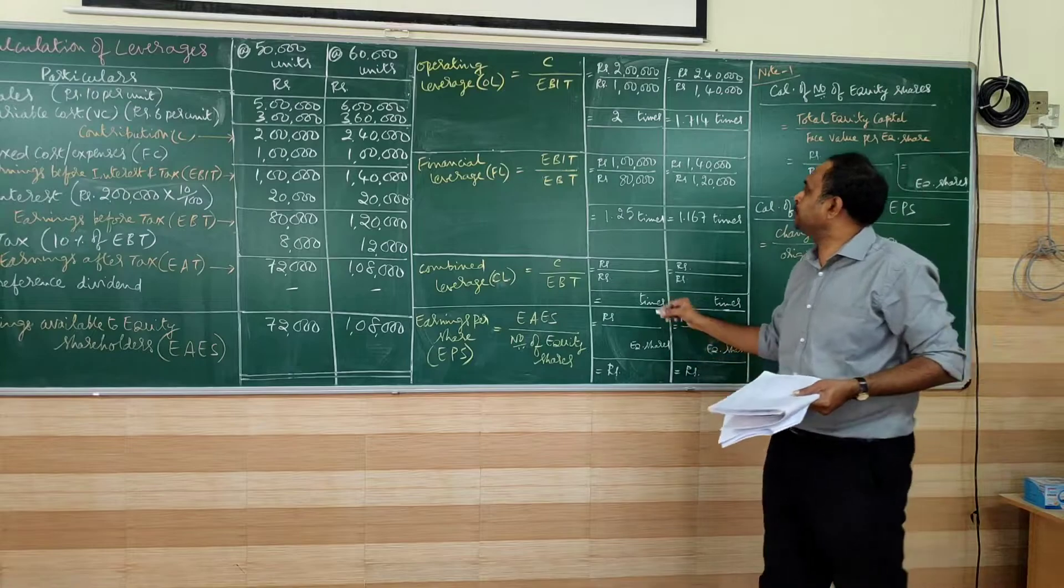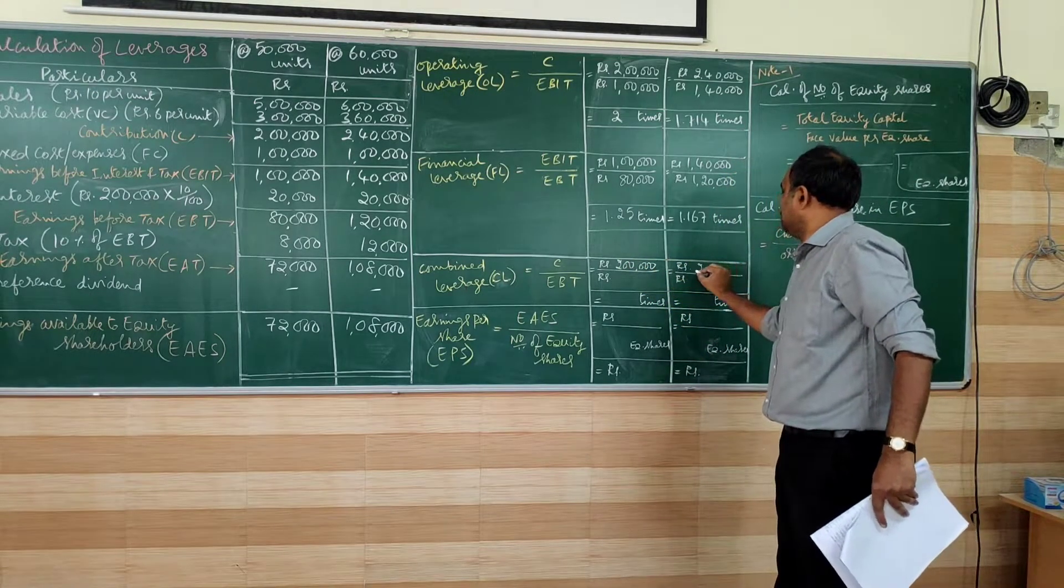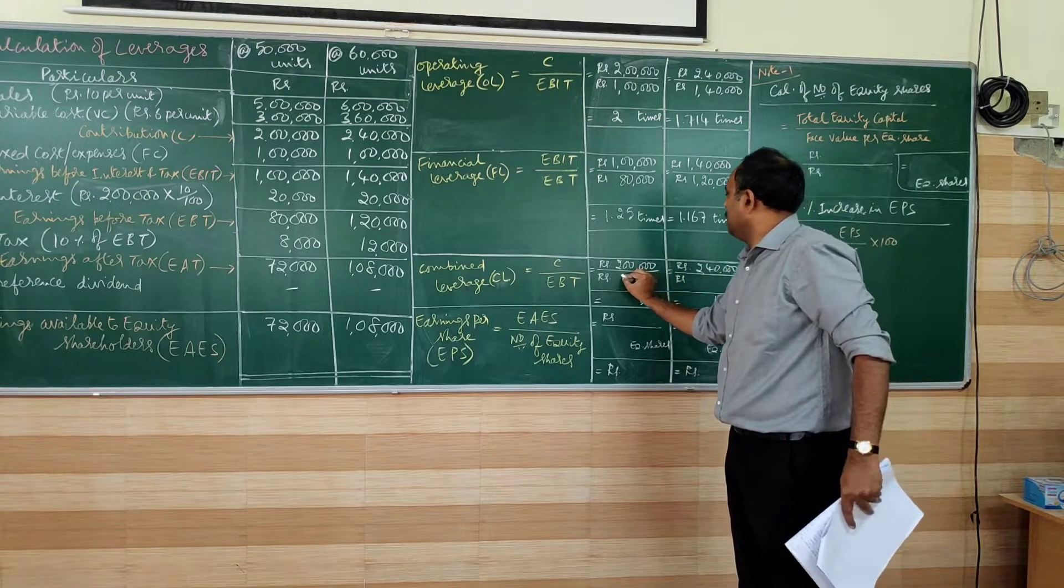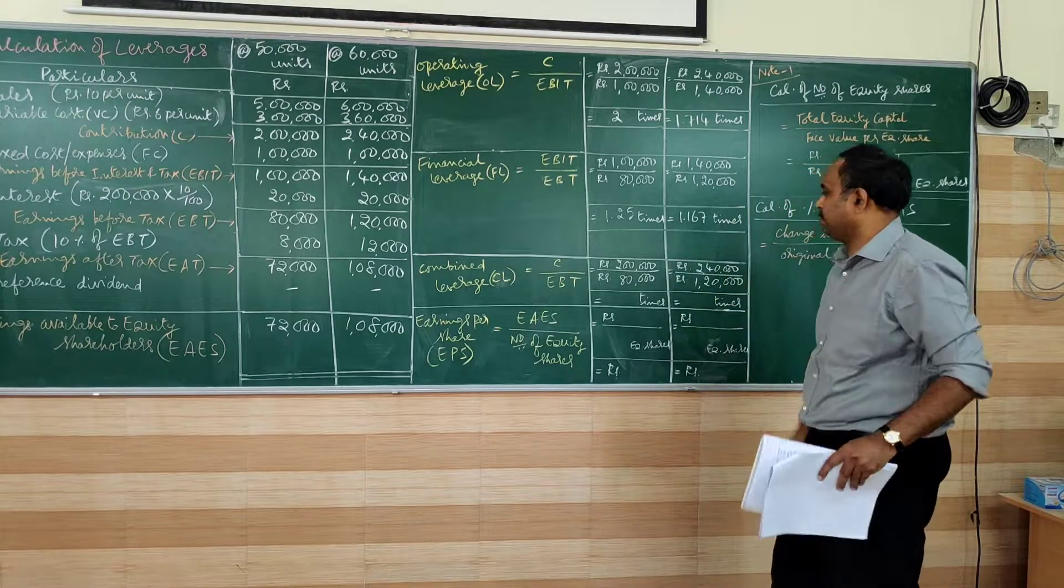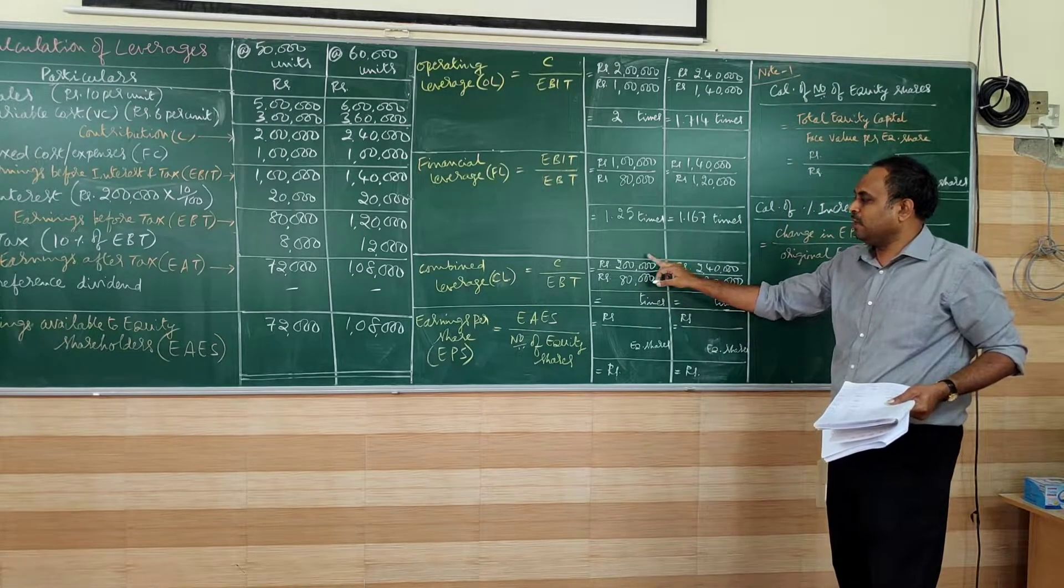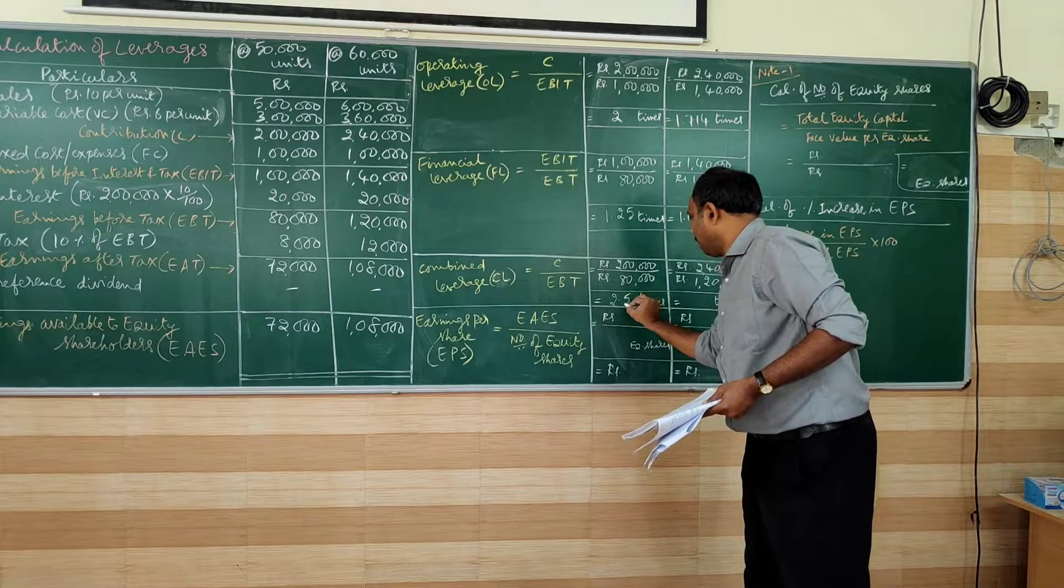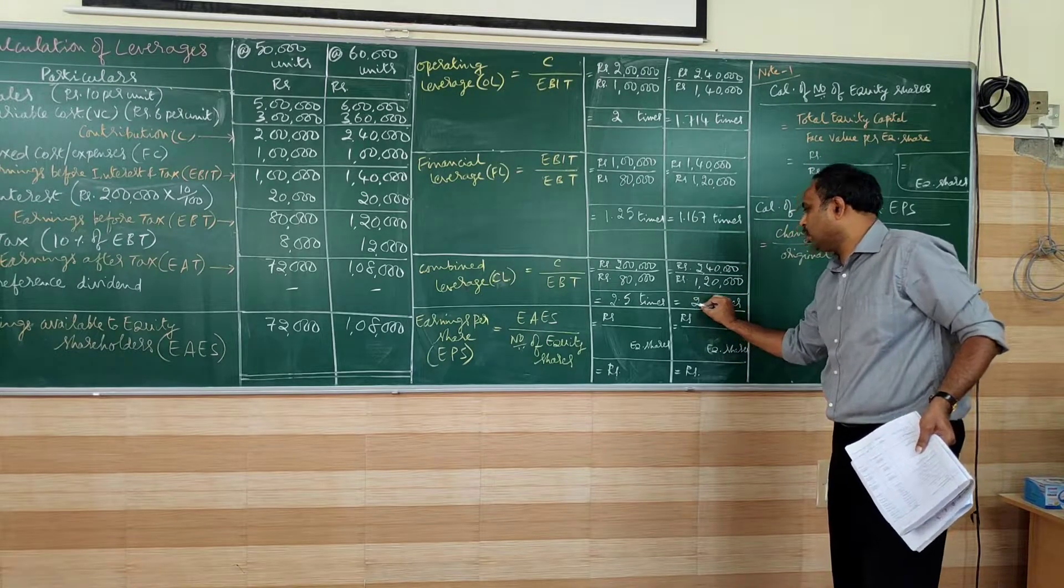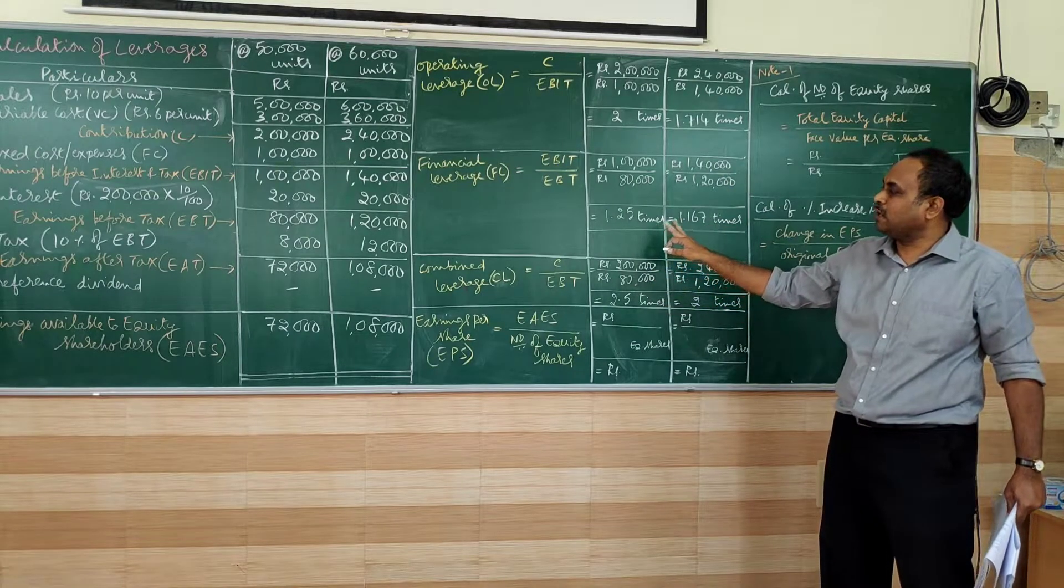Then combined leverage: contribution 2 lakhs and 2 lakh 40. EBT: 80,000 and 1 lakh 20,000. So combined leverage: 2 lakhs by 80 equals 2.5 times. 2 lakh 40 by 1 lakh 20 equals 2 times. So till here, same formula what we have in the earlier problem.